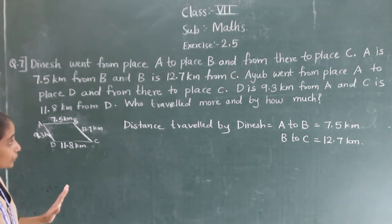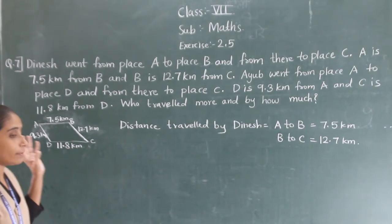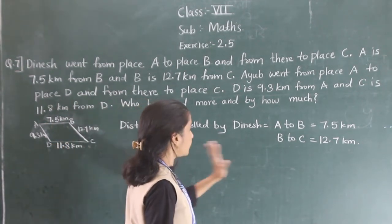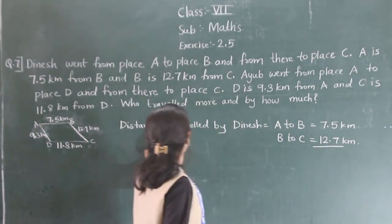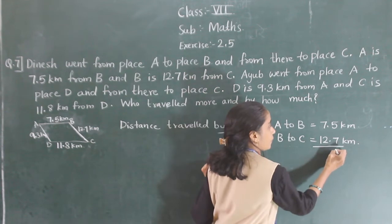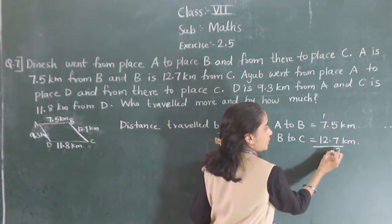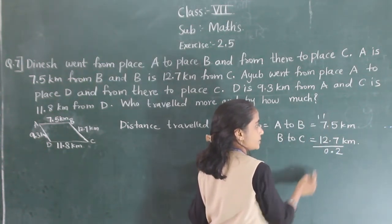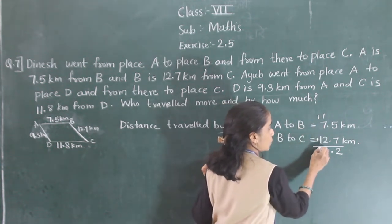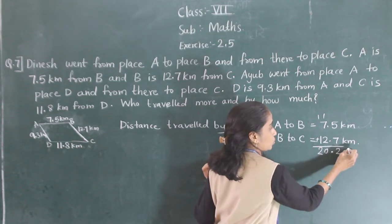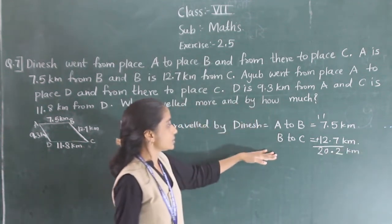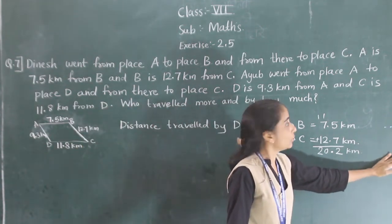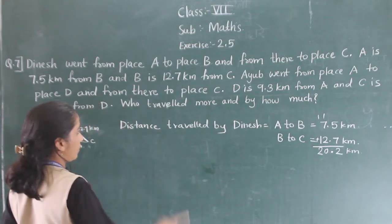So we need to find the total distance traveled by Dinesh: 7.5 plus 12.7. Decimal point as it is — 7 plus 5 is 12, 2 plus 7 is 9, 9 plus 1 is 10, carry 1 plus 1 is 2. So 20.2 km. Total distance traveled by Dinesh is 20.2 km.